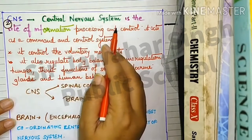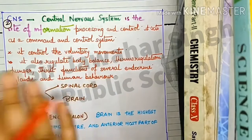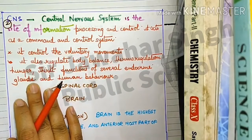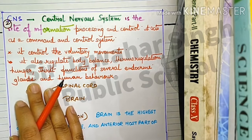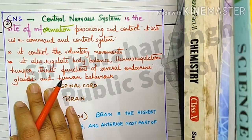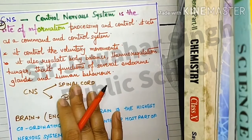The Central Nervous System, CNS, includes the brain and spinal cord. It is covered by the axial skeleton and lies along the main axis of the body. CNS is a site of information processing and control, and acts as a command and control system.